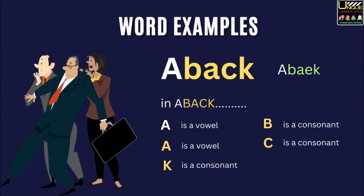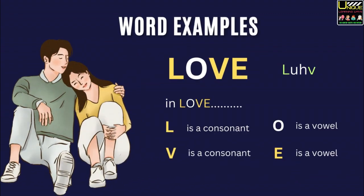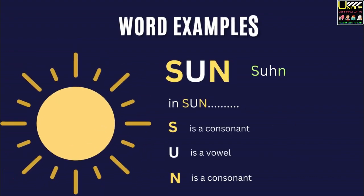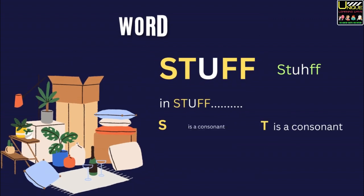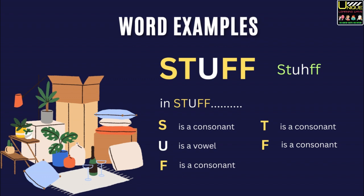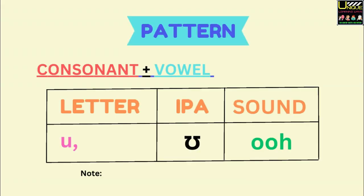Love. In love, L is a consonant, O is a vowel, V is a consonant, and E is a vowel. Son. In son, S is a consonant, U is a vowel, N is a consonant. Stuff. In stuff, S is a consonant, T is a consonant, U is a vowel, F is a consonant, and F is also a consonant.